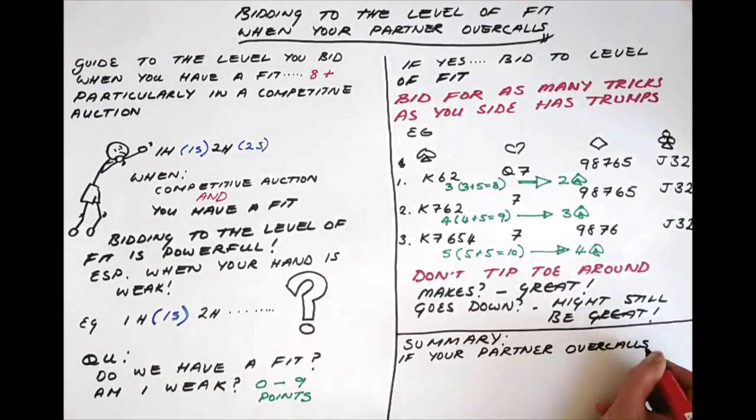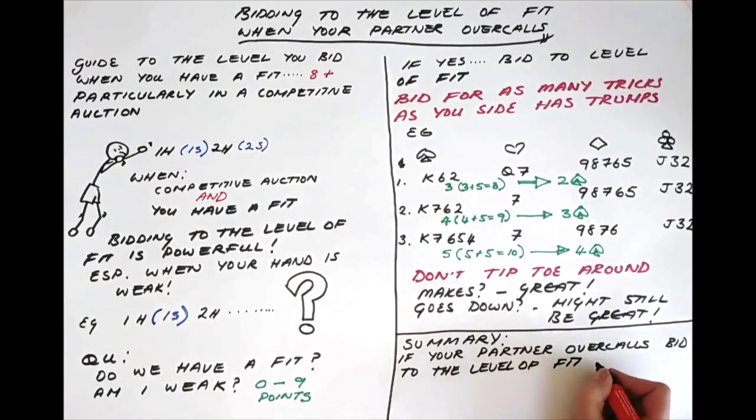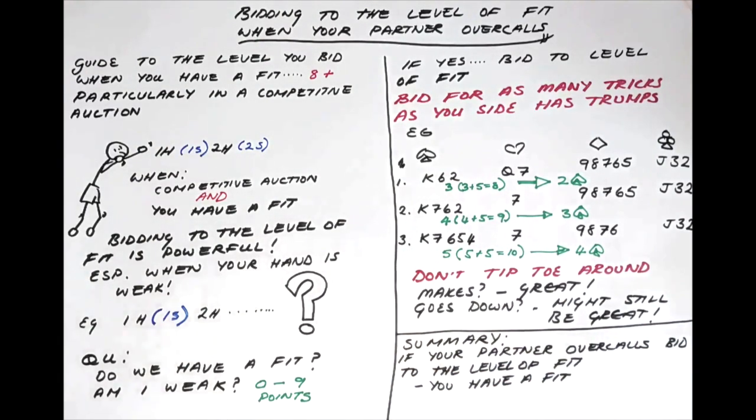In summary, if your partner overcalls, bid to the level of fit where you have a fit with your partner and you are weak.